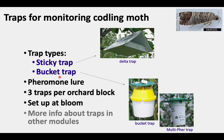There are several different trap types used for monitoring codling moth. There can be a sticky trap, such as a delta trap or a wing trap. There can be bucket traps. The most readily available type is the bucket trap shown here, which comes in three colors: white, yellow, and green. In either of these, we use a pheromone lure to attract the male moths into the trap. I recommend three traps per orchard block, and these should be set up at bloom.